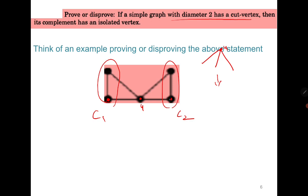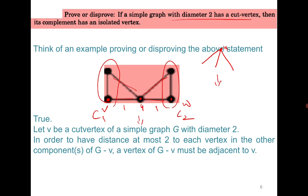Since the diameter is 2, for any vertex V in C1 and W in C2, their distance must be at most 2. The only way this holds is if U is adjacent to both V and W — meaning U is adjacent to all vertices in the graph. Since U is adjacent to every vertex in the original graph, in the complement U is not adjacent to any vertex and therefore forms an isolated vertex. The key insight is that the cut vertex becomes the isolated vertex in its complement.